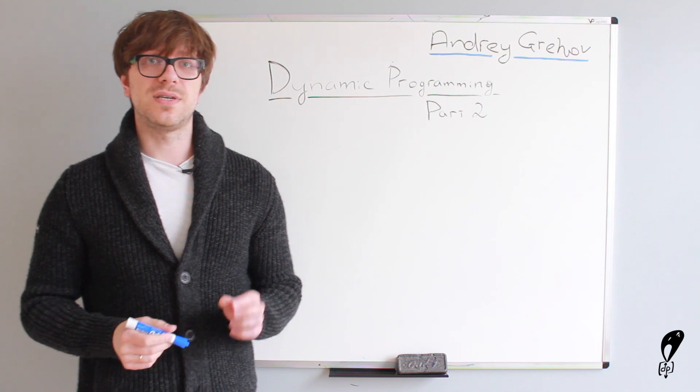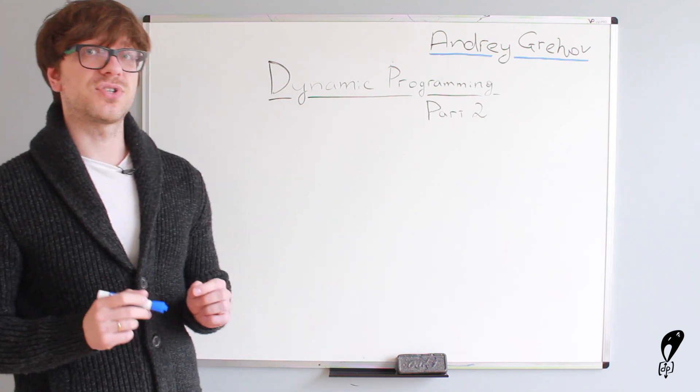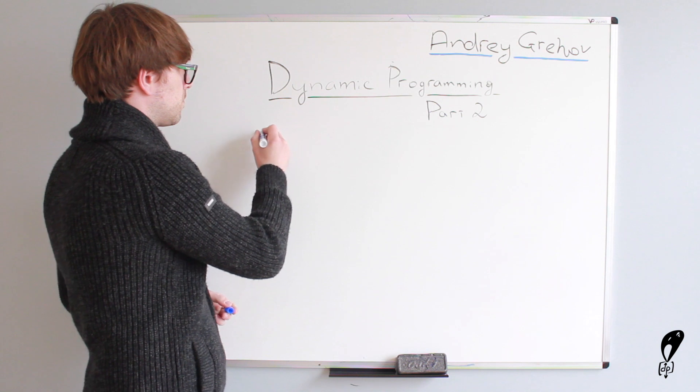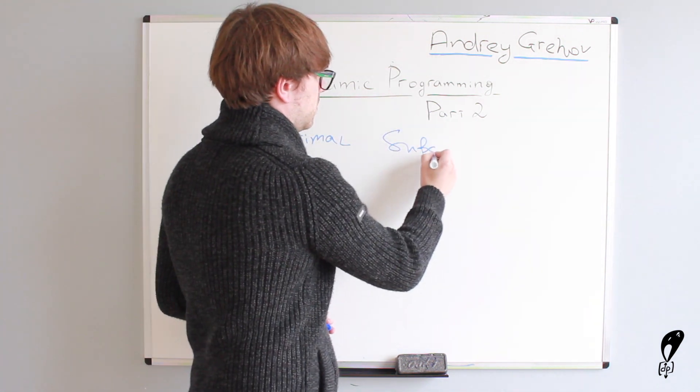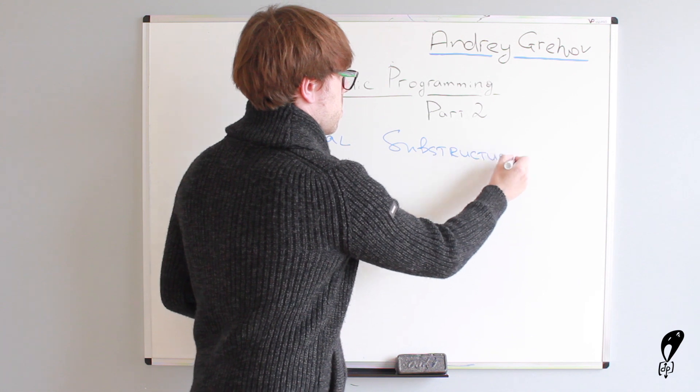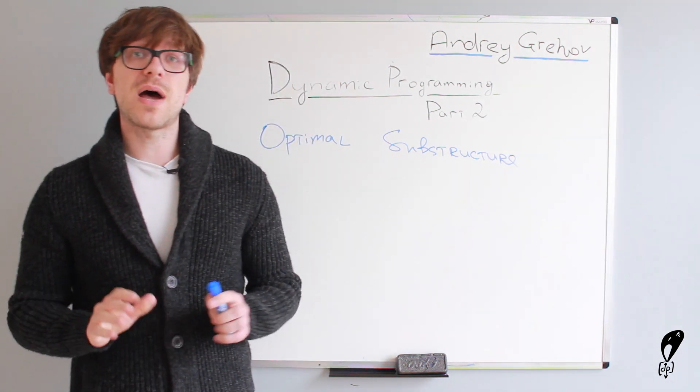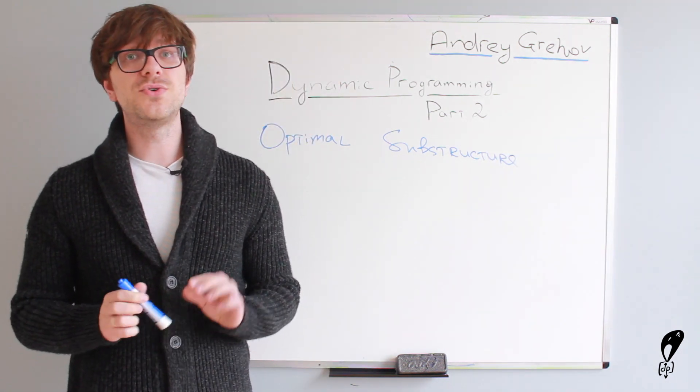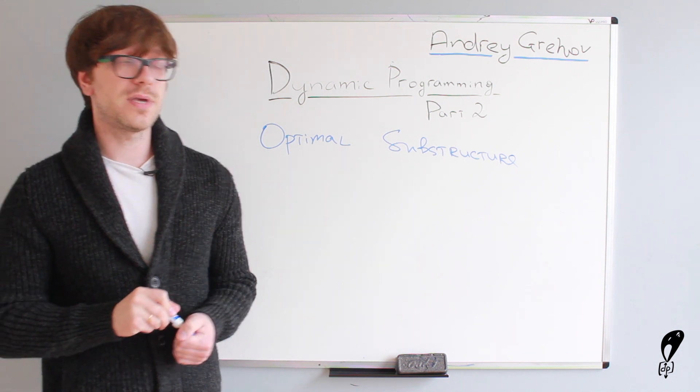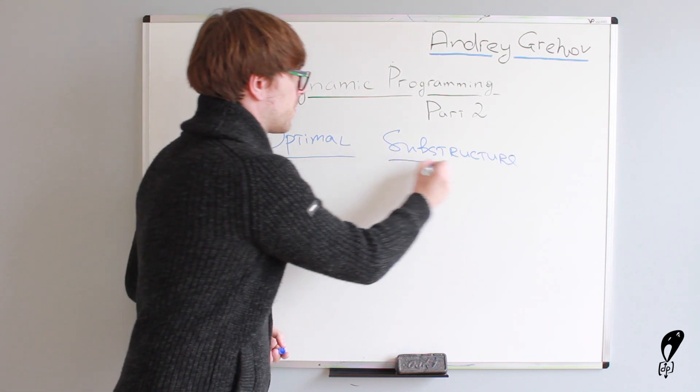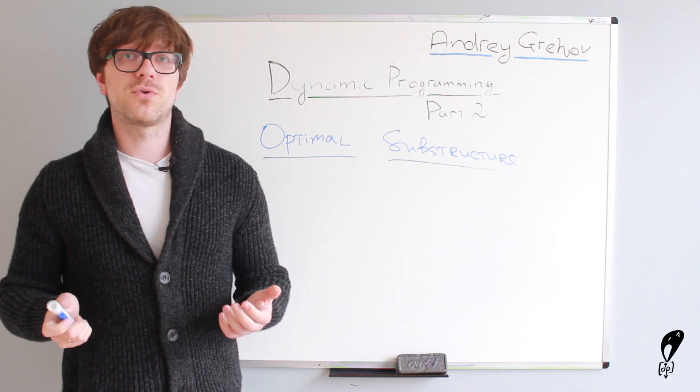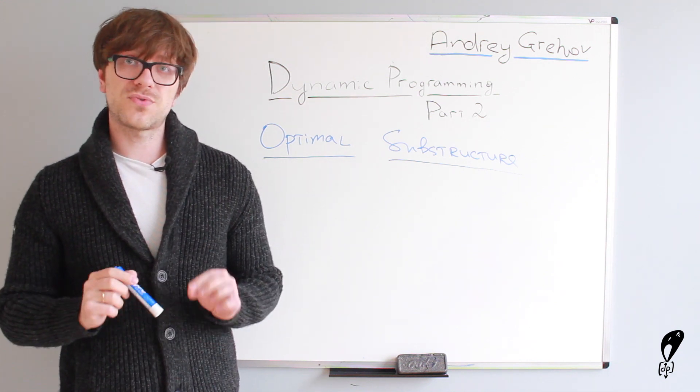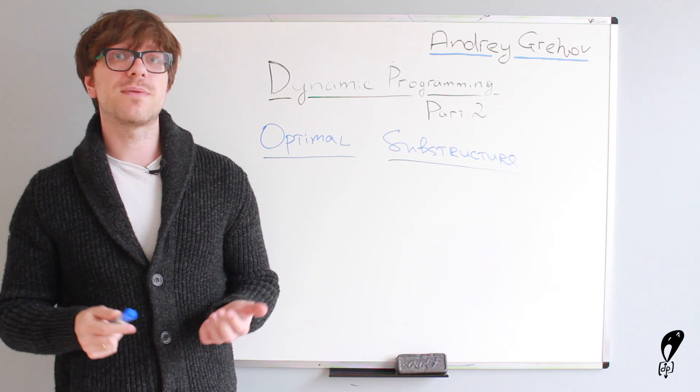The first property is called optimal substructure. The term optimal substructure has two components in it, optimal and substructure. Optimal simply means the best or most favorable, whereas substructure means a sub-problem of the main problem.